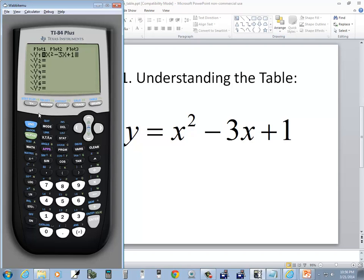So I'm going to do second window and I'm going to down arrow to independent. I want to make sure both of these are marked as auto. So what I did is I put my cursor on auto and I pressed enter and that changes the highlighting to auto.